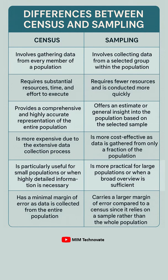Census is particularly useful for small populations or when highly detailed information is necessary, while sampling is more practical for large populations or when a broad overview is sufficient.